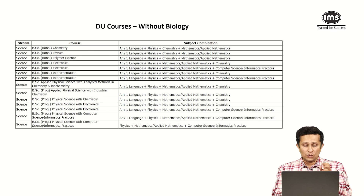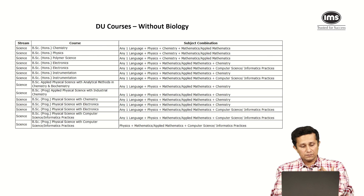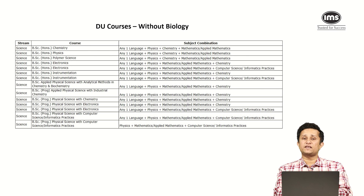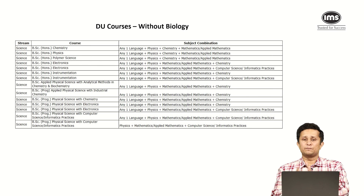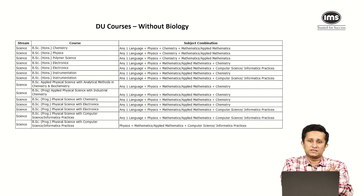And then you have a few other niche programs: physical science with analytical methods in chemistry and biochem, and applied physical science with industrial chemistry, which has a fixed combination — PCM. So when you look at the PCM combination, these will be more on the computer side.